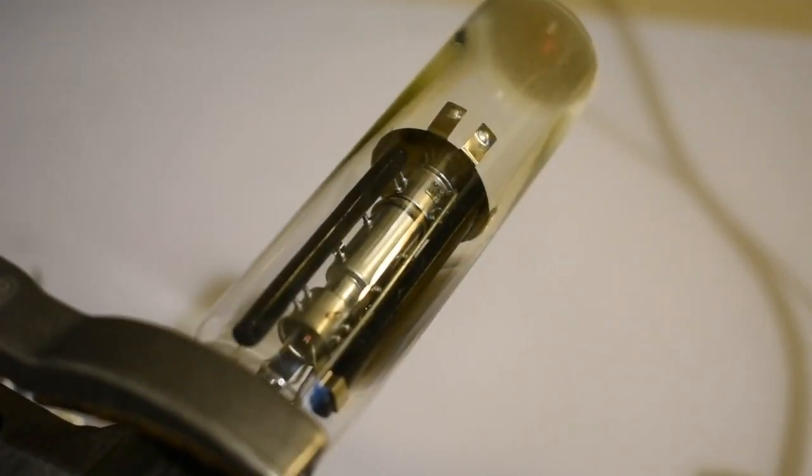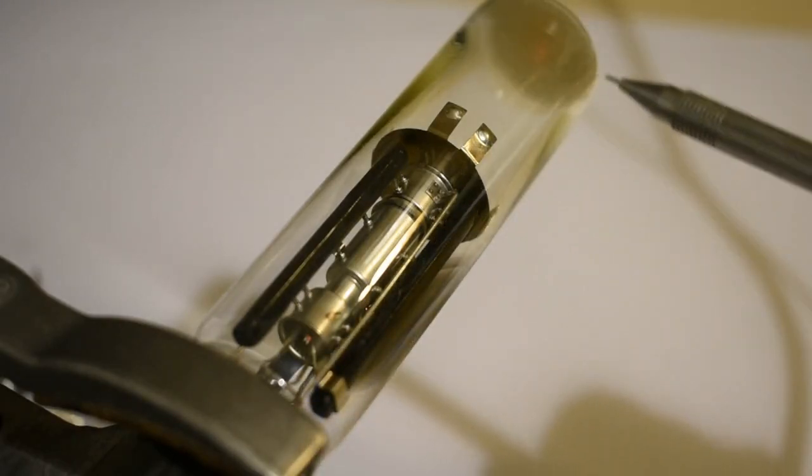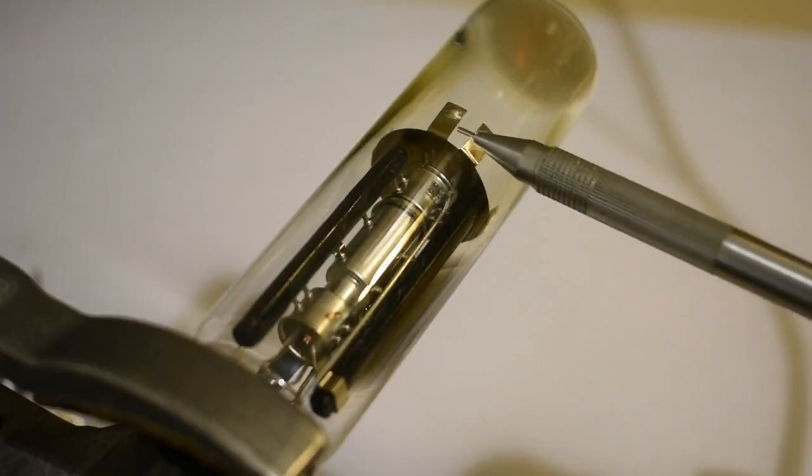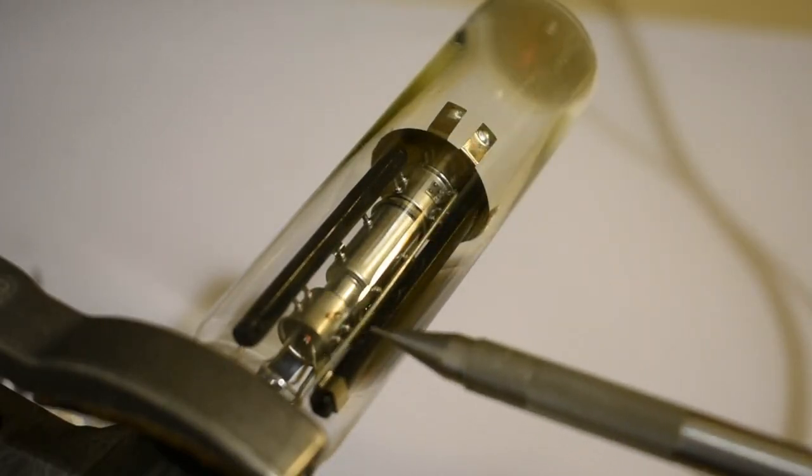So this is looking at the back of the tube along the electron gun to the phosphor in the front. I've got 6 kV on this anode, and 9 volts on the heater.